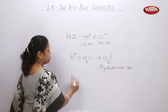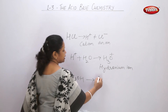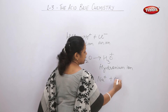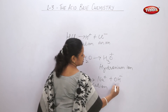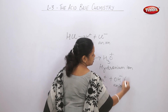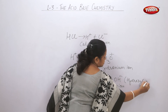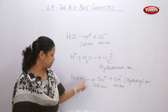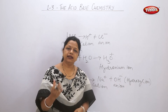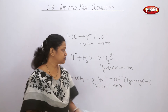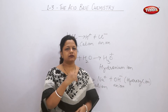In the case of a base, if I take NaOH, how will it dissociate? It will dissociate into Na+ ions and hydroxyl (OH-) ions. Na+ is the cation and OH- is the anion — this is called the hydroxyl ion. Since NaOH can dissociate into Na+ and OH- ions, it can carry electric current. Therefore, acids and bases which easily dissociate into ions are good conductors of electricity.